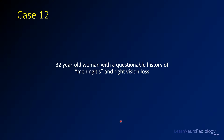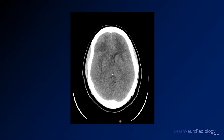Picking right up here with case 12, we have a 32-year-old woman with a questionable history of meningitis and right vision loss. Here we have some images from a non-contrast CT. Let's take a look at those for a second.